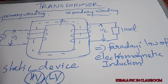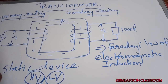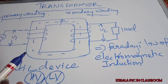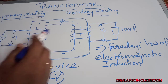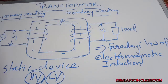This is the basic overview of the transformer. The operating principle of the transformer is Faraday's Law of Electromagnetic Induction. It is a static device. The winding connected to the low voltage side is called the secondary winding.